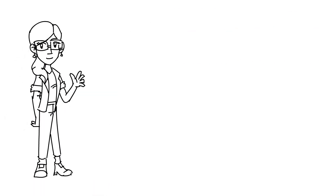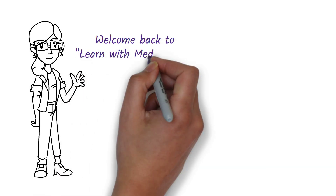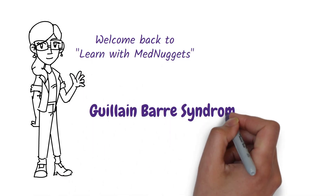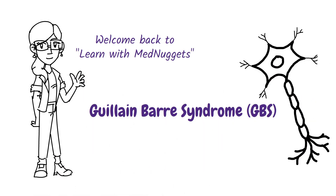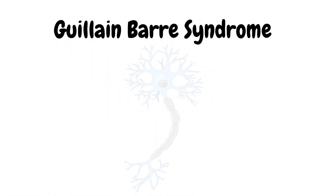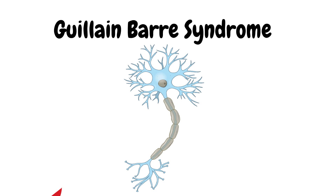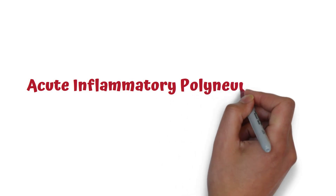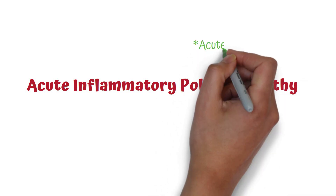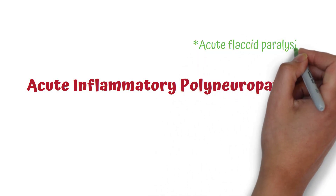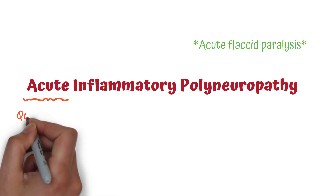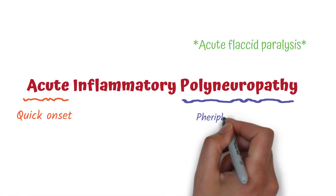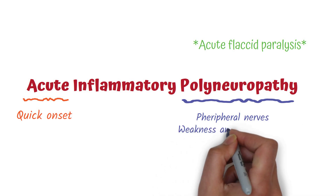Hi guys, this is Vinuri from Learn with Mednuggets. In this video I'm going to talk about Guillain-Barré syndrome. Guillain-Barré syndrome is a neurological disorder in which the immune system attacks part of the peripheral nervous system. It is an acute inflammatory polyneuropathy that causes an acute flaccid paralysis — a quick onset condition that affects the peripheral nerves causing weakness and sensory loss.